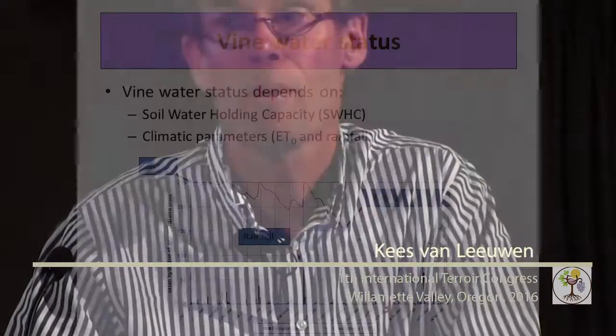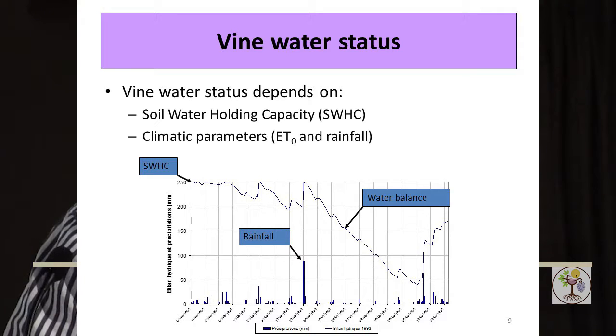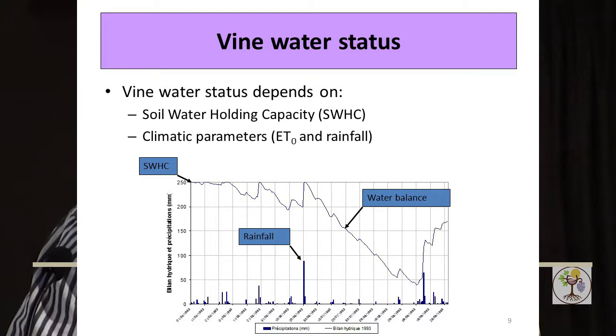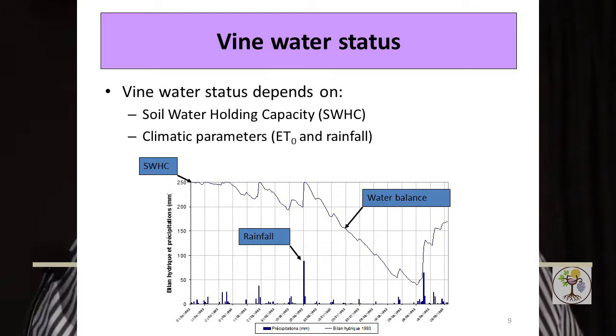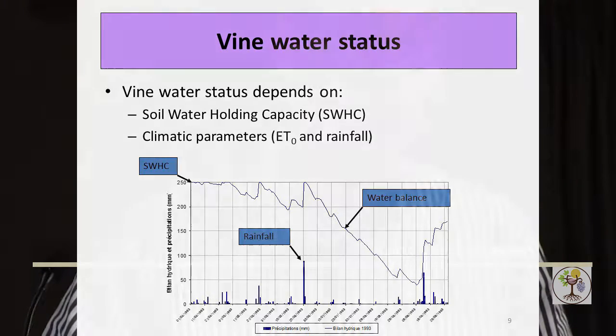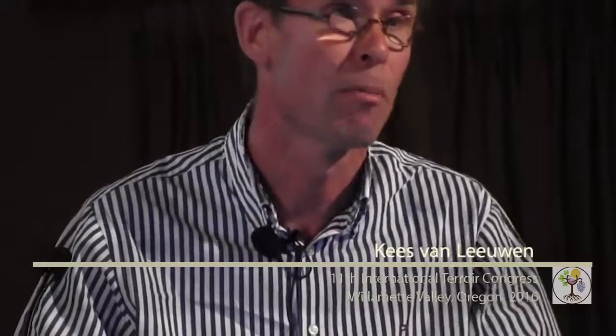Vine water status is another important terroir factor which has been shown by many authors, and it's a sort of composite parameter because it depends on the soil — on one hand on the soil water holding capacity, and on the other hand on climatic parameters. You can very clearly see the influence of the soil and the climate on the water status of the vines when you do soil water balance modeling. The result depends both on soil water holding capacity and on climatic parameters.